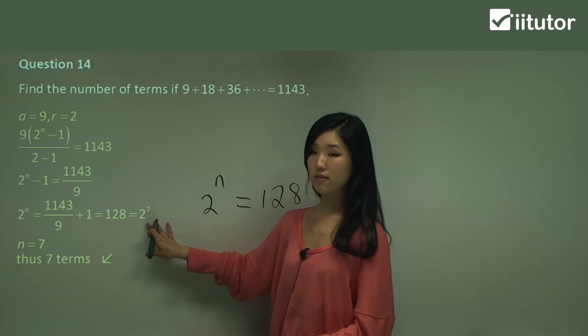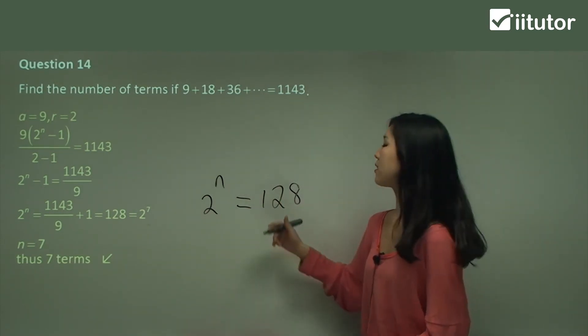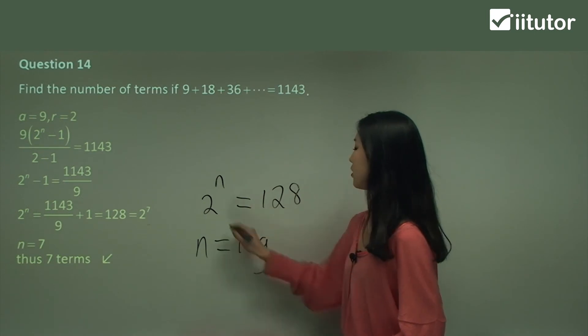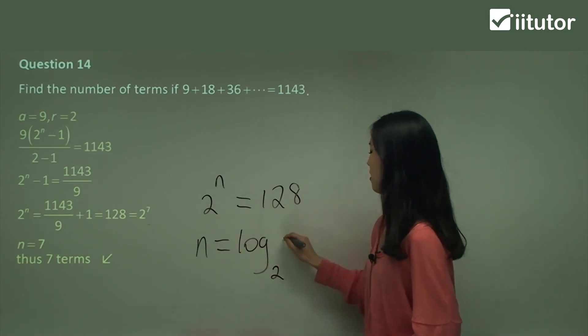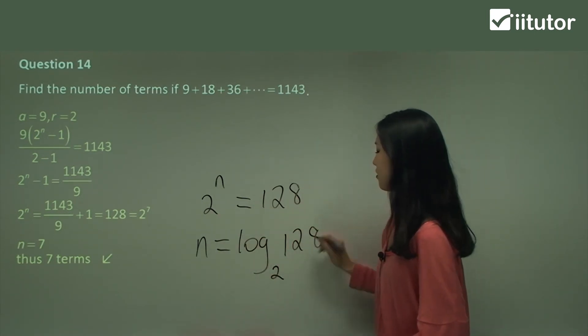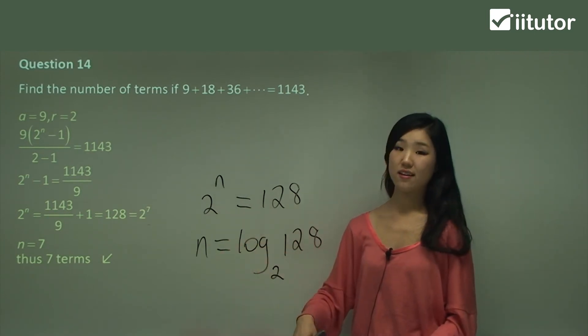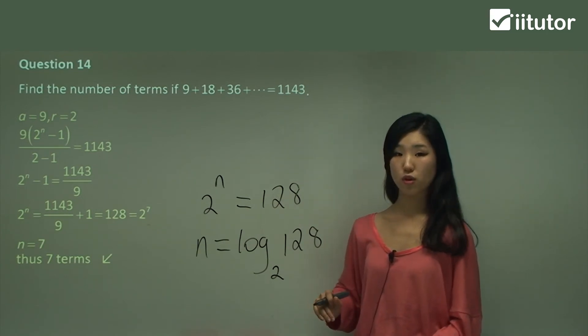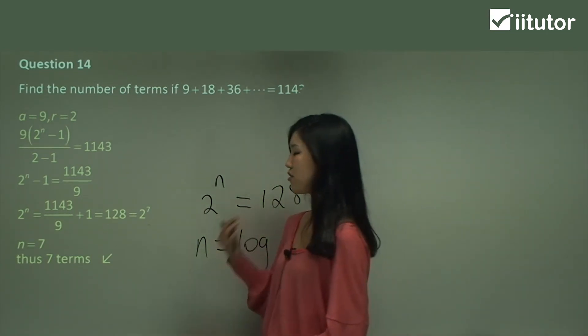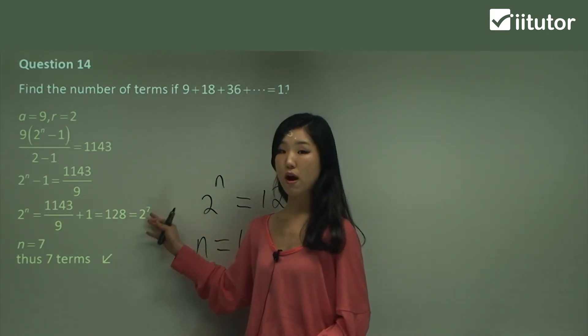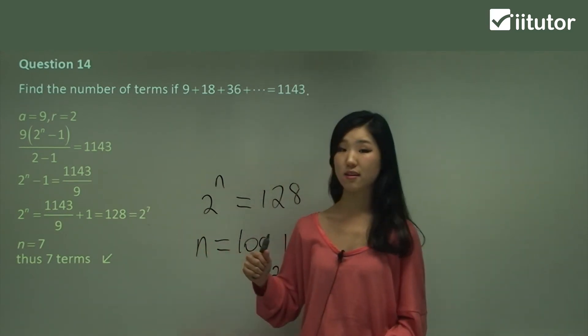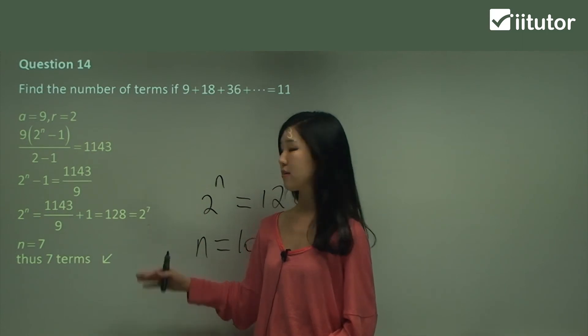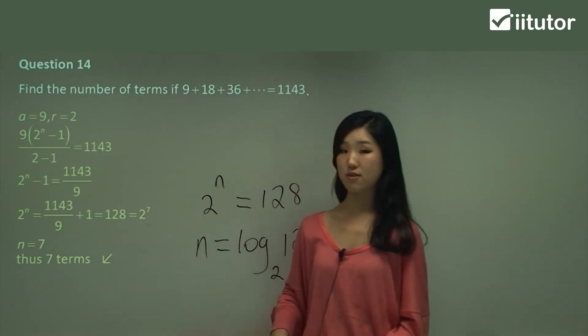If you don't want to change it around like this, you can just use your log rules like this. So n is going to be log base 2 of 128. So this will be your value for n. So either way is fine guys. You can go ahead and use your log rules if you want to. If you don't think you can find out what 2 to the power of what makes 128.